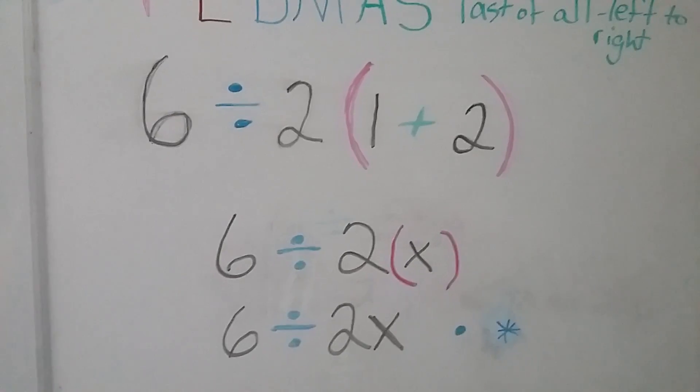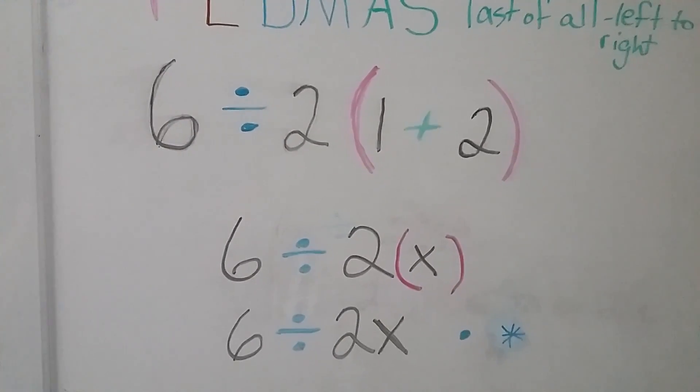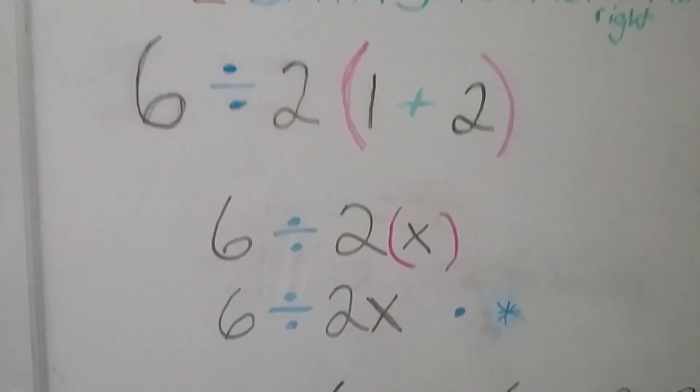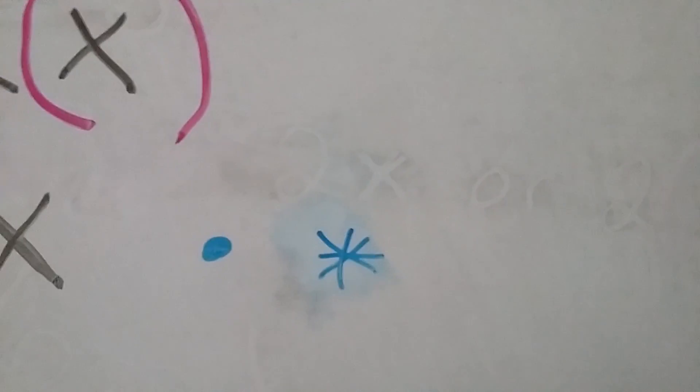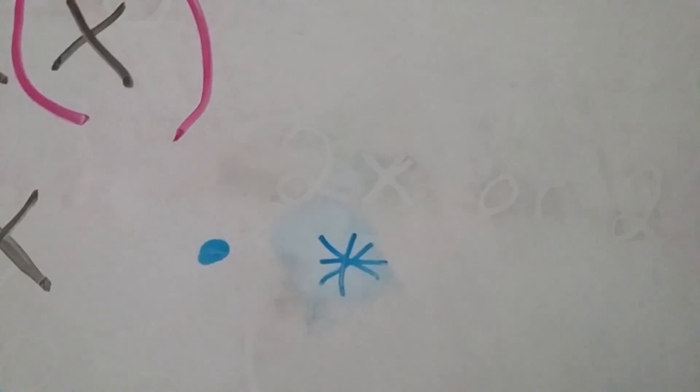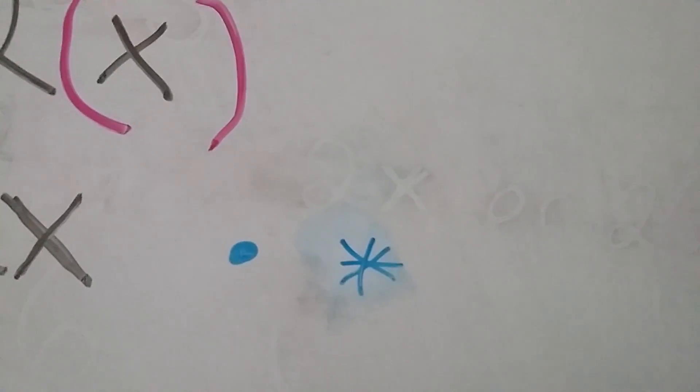the hardest thing for my kids to understand was getting rid of that x that means multiplication and using either a dot, like this dot here, or if you're using the computer, you'd use a star or an asterisk. And those both mean multiplication also, so I made them in blue.